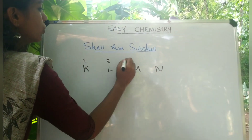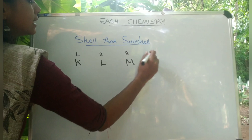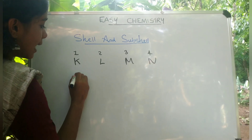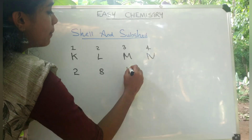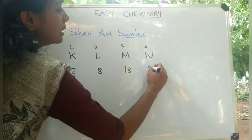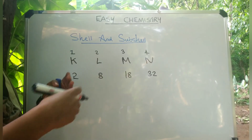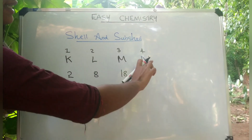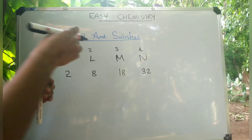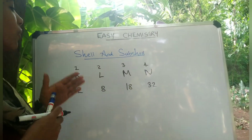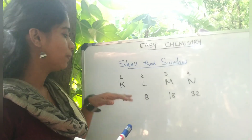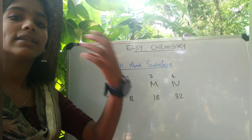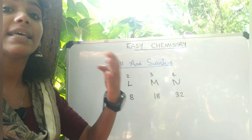We also discussed the shell. We were going to talk about shell number 1, 2, 3, 4. In the video, there is also a sub-shell. K, in the shell, there are electrons. Where are the sub-shells?